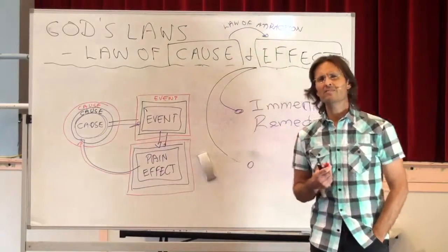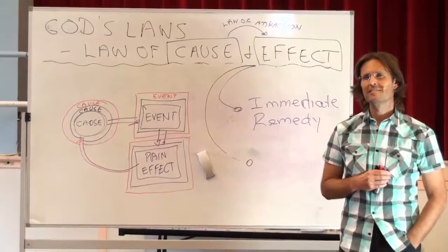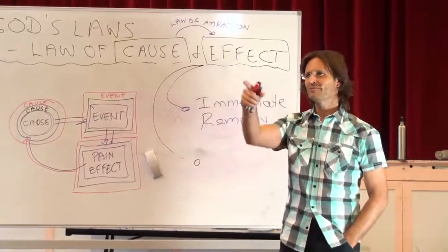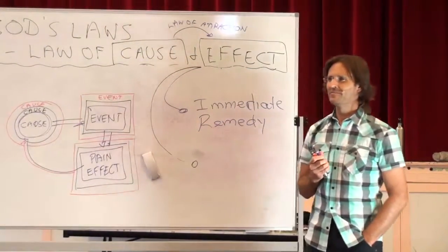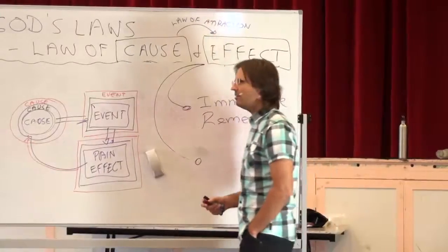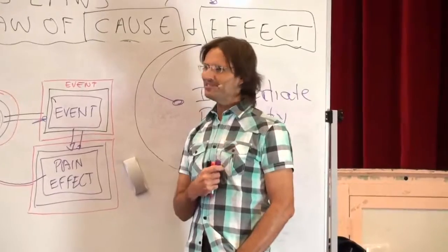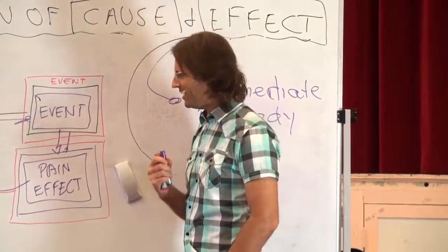Now why has God created it that way? It's a really simple answer. So you eventually see it. Exactly. So you eventually go, maybe I'm doing the wrong thing. Maybe I need to choose to do something else. Maybe I need to change my action. Maybe I need to stop trying to fix the effect. That's why it's done.